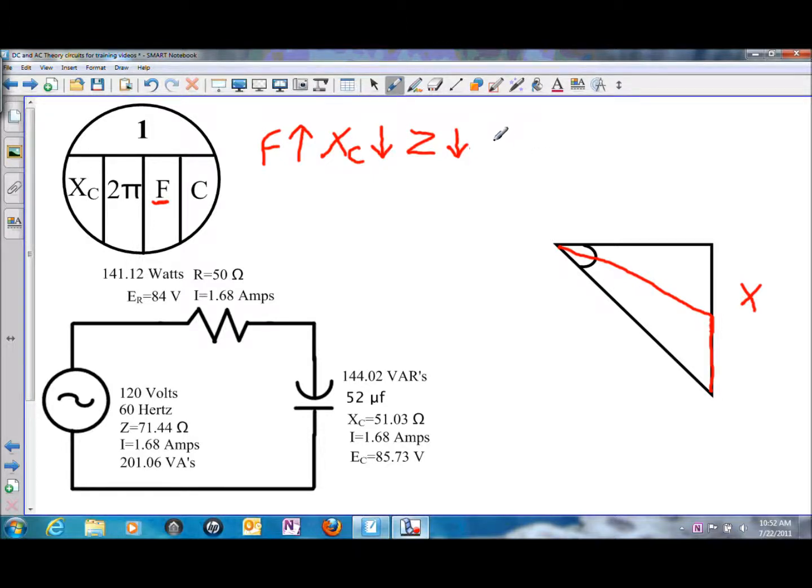Once again, resistance remains unchanged. Nothing was changed in the resistance because frequency has no effect on it. If capacitive reactance and impedance, both oppositions to current flow, decrease, then the overall current flow would have to increase.